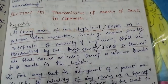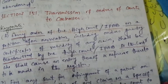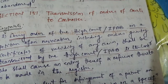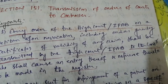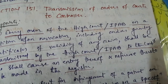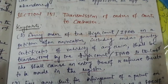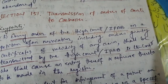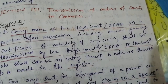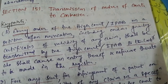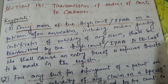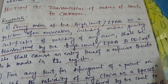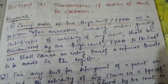Dear friends, today I will discuss another section from chapter 23 of the Indian Patent Act or the Patent Act 1970. Today's section is section 151 and the title is 'Transmission of Orders of Courts to Controller'. So, let us proceed through my key points.